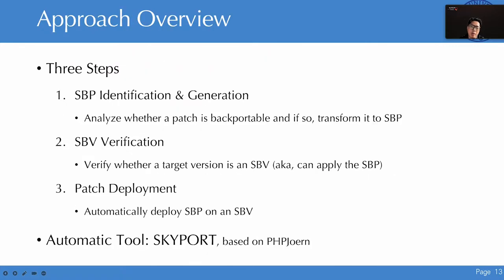We now discuss the design of our system, which is implemented based on PHP-Joern and called Skyport. Skyport backports the official patch to old versions in three steps. First, Skyport analyzes the official patch to identify whether it is backportable, and if so, transforms it into SBP. Second, Skyport verifies the target version to identify whether it is an SBV. Finally, Skyport automatically deploys the SBP on the SBV.